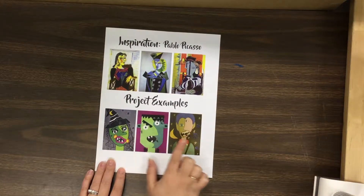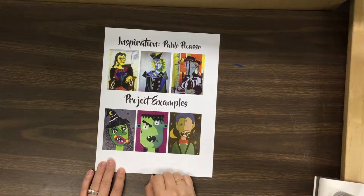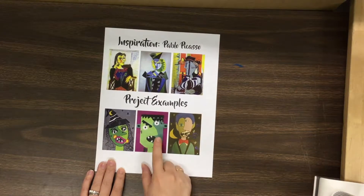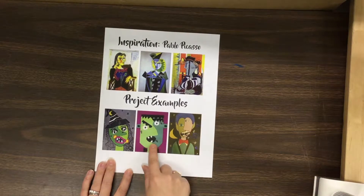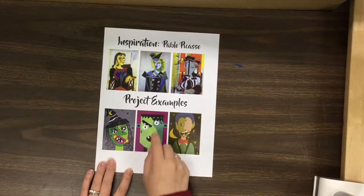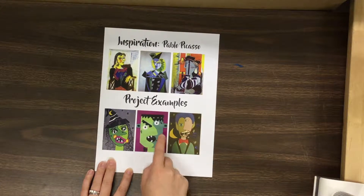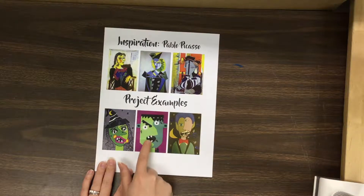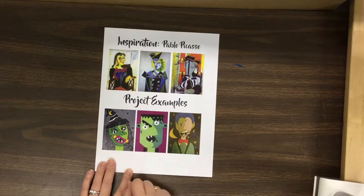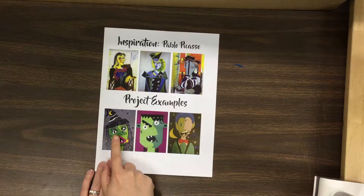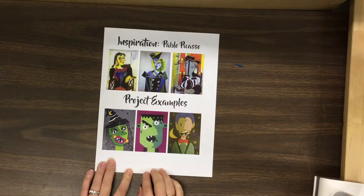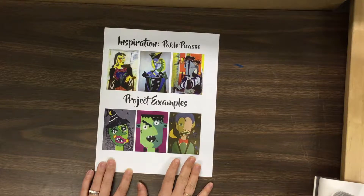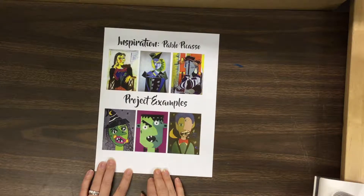You're also going to see three examples showing the project. Here you can see the monster facing forward, but on the light green side of his face he's in profile — we see his nose sticking out to the side and his mouth kind of matching up with where it is on the other side. The same thing goes for the other examples as well. Take a couple minutes to look at this, then we're going to start planning your project.